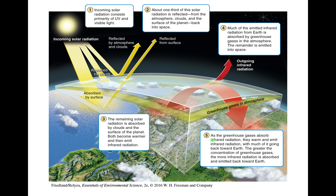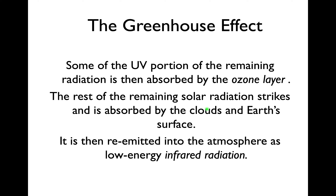After being absorbed, energy is re-emitted at a lower energy level — that warm infrared radiation we can feel. A lot of that goes back into space, but some goes into the atmosphere and is absorbed by the greenhouse gases. This is what keeps infrared energy back toward the surface and warms it. Without greenhouse gases we would die — the temperature would be too cold. The greenhouse gases warm themselves and emit energy back toward Earth, which we then absorb — that's the greenhouse effect cycle.